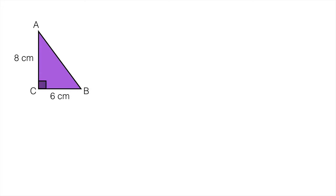In this lesson we're going to look at calculating the length of the hypotenuse. In this example I need to calculate the length of AB. AB squared will be equal to the sum of the other two squares — in other words BC squared plus AC squared.